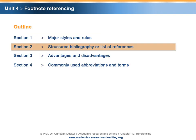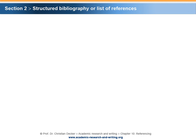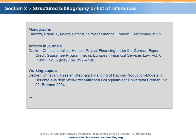Section 2 – Structured Bibliography or List of References. This is an example of a structured bibliography usually required by the footnote system. Structural elements can be monographs, articles in journals, working papers, etc.